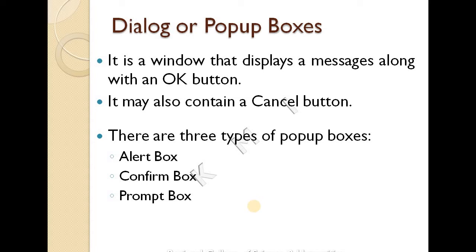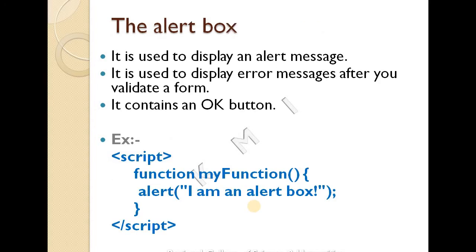The three types are: alert box, confirm box, and prompt box. The first one is the alert box. It is used to display an alert message or error messages after validating a form. The alert box displays one error message and has an OK button.